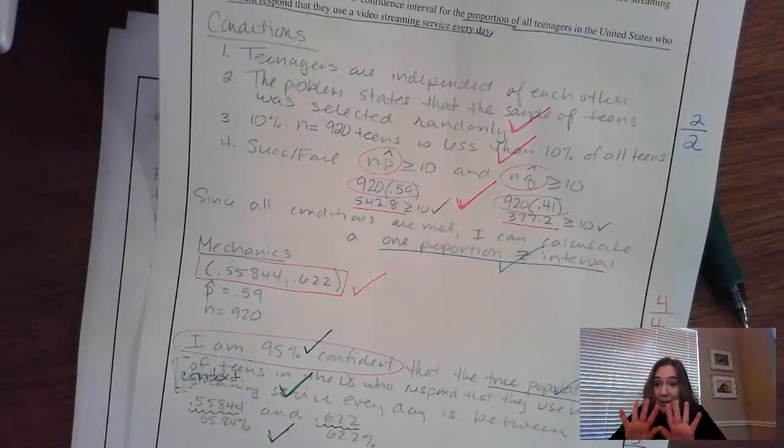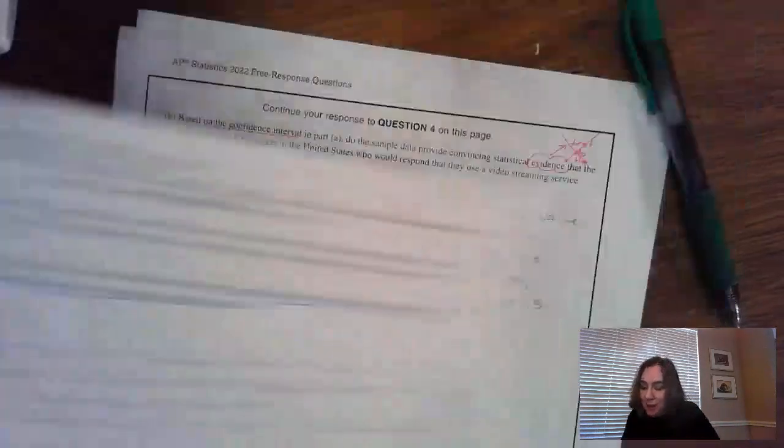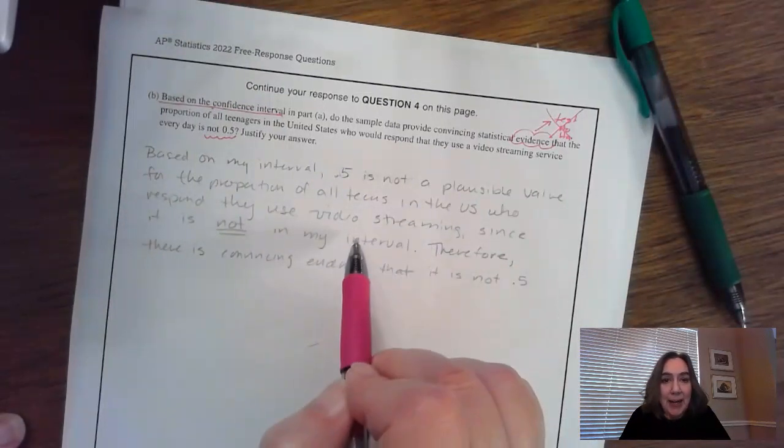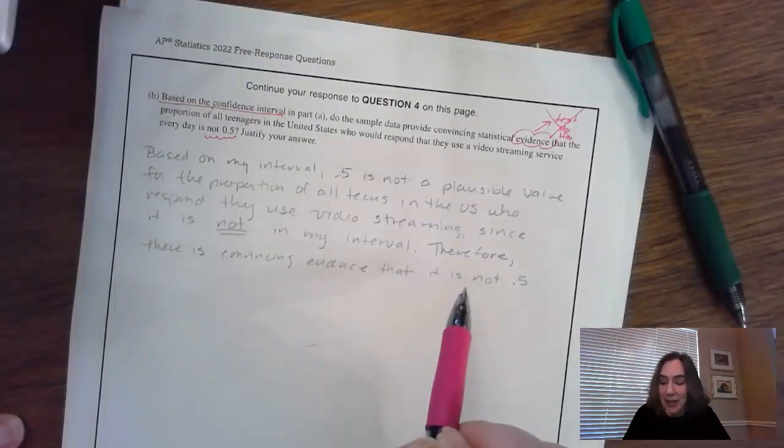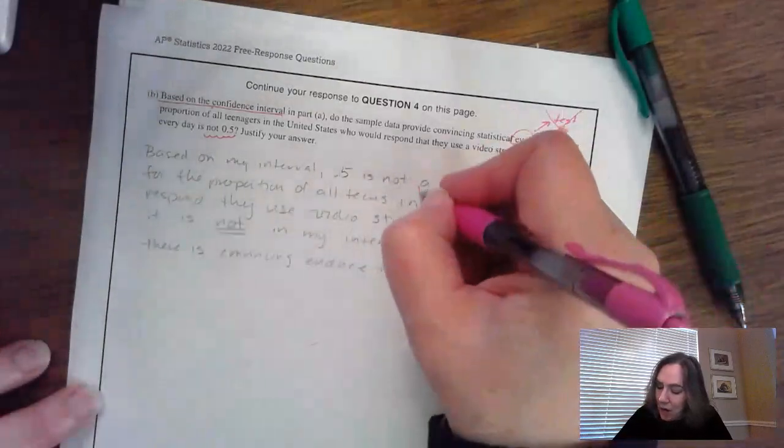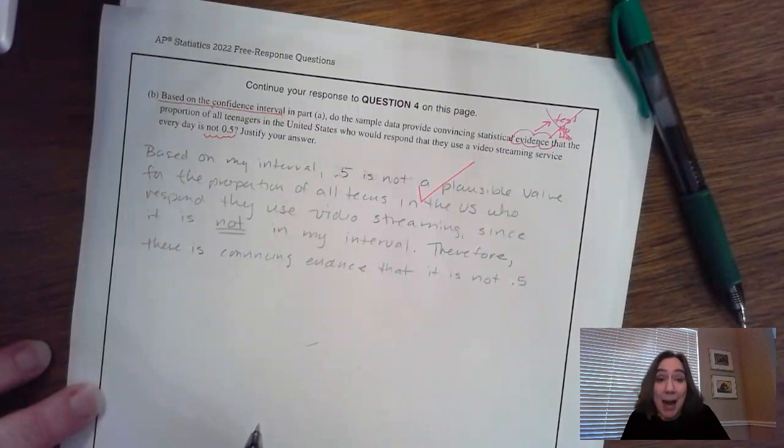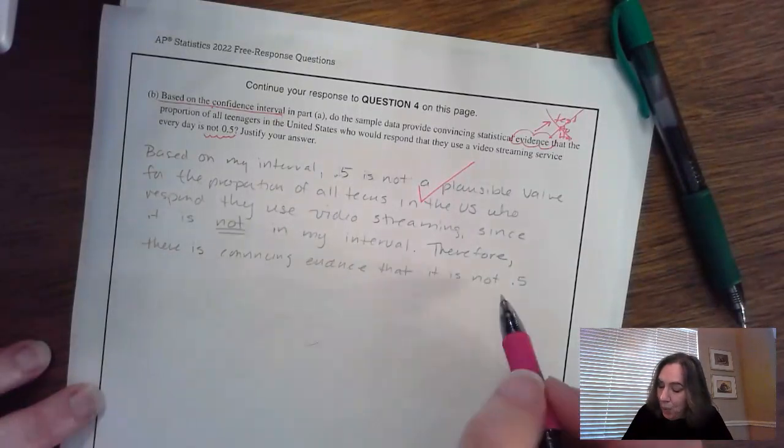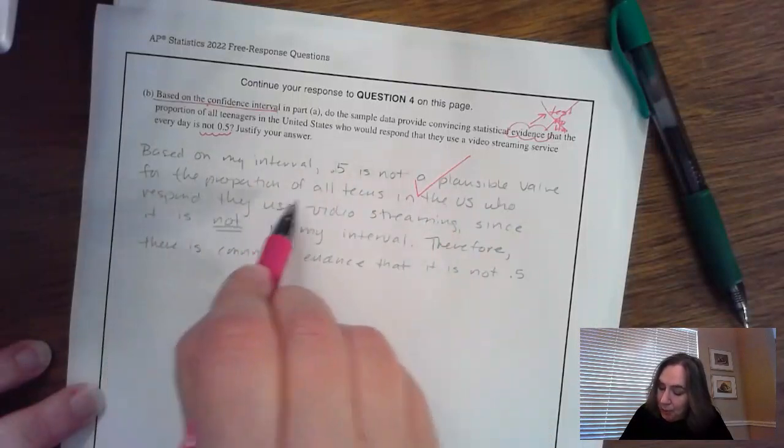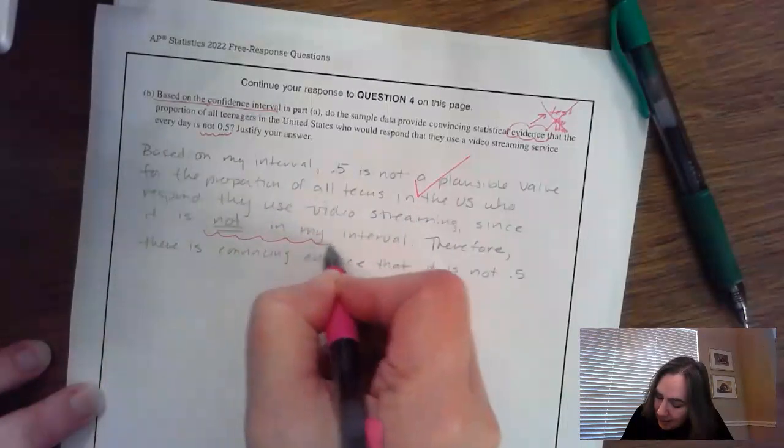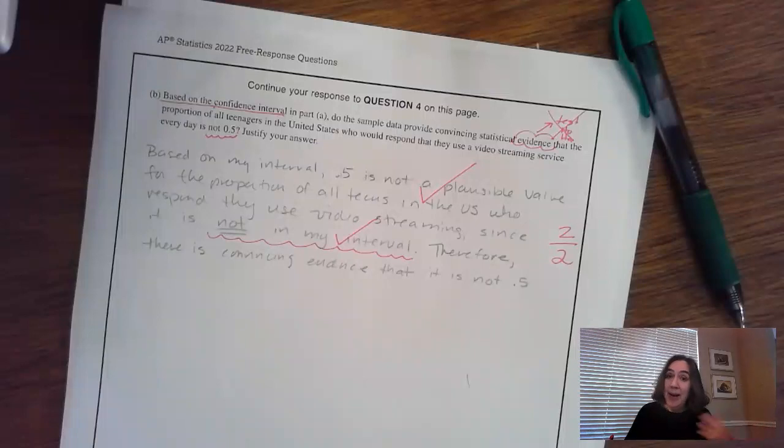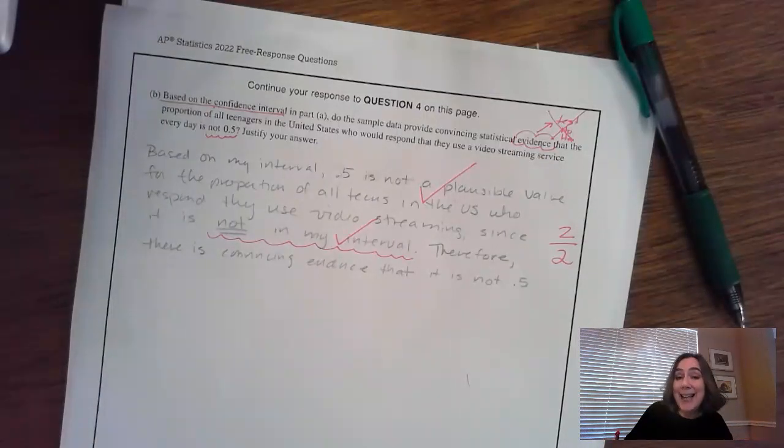That means that based on this interval, it is not plausible. So in my answer, I talked about that 0.5 is not a plausible value for that proportion. And that we do have evidence that it is not 0.5. Essentially, there's a lot of double negatives here. It's a little bit confusing. So what the AP was looking for is that making sure that you talked about that it's not plausible, or that we do have evidence that it's not 0.5, and by also illustrating that 0.5 is not inside of my interval. So since 0.5 is not plausible for the proportion of all teens in the US who respond that they video stream because it is not in the interval, that right here for saying, making sure you say it's not in the interval, that it's not plausible, and that means we do have evidence that it's not. So only worth two.